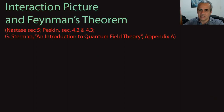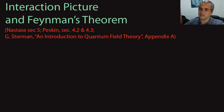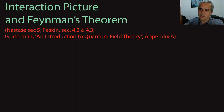The first thing I want to do is define what we call the interaction picture, which is another picture of quantum mechanics — just like the Heisenberg or Schrödinger picture — but which is very convenient for the kind of perturbation theory we want to do here. References: Anastasi section 5, Peskin sections 4.2 and 4.3. Before formalizing that, I want to do a quick review of what pictures are in quantum mechanics, which is very well done in Sterman's book, Appendix A.